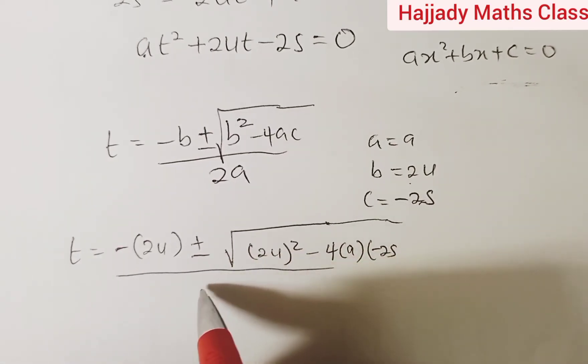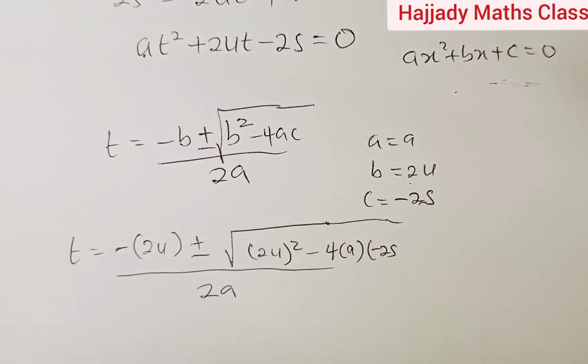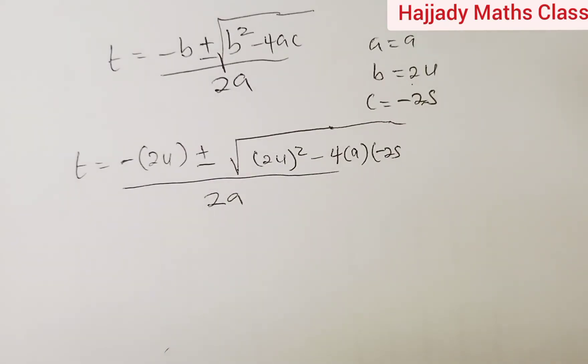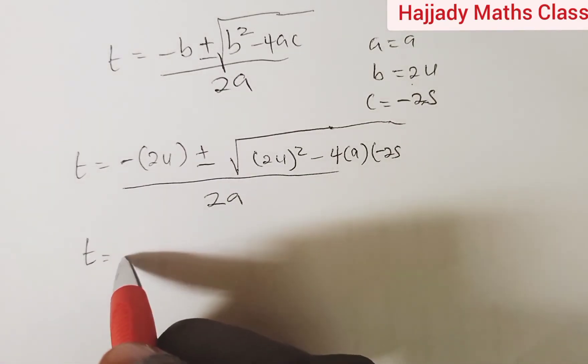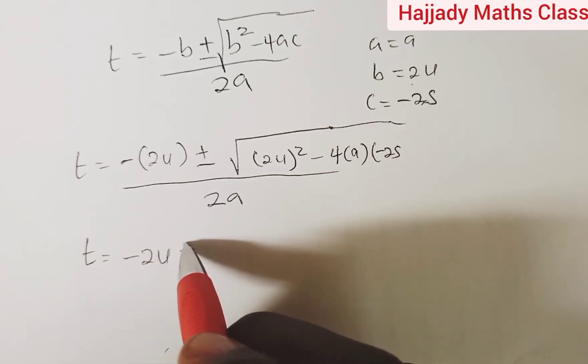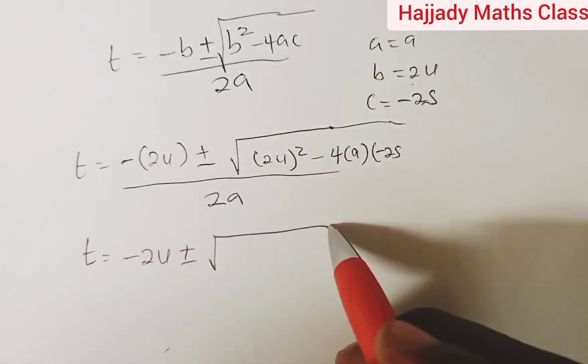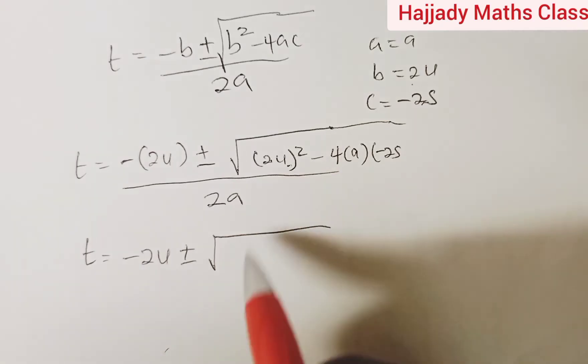Don't forget everything over 2a. Solving this further, we have that our t equals minus 2u plus or minus square root of 2u squared gives 4u squared.